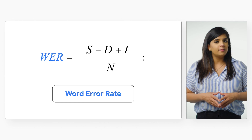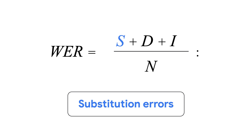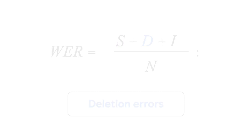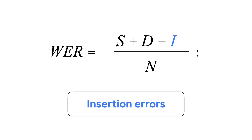Word error rate is a combination of three types of transcription errors which can occur. First, we have substitution errors — words that are present in the hypothesis and ground truth, but not transcribed correctly. Then deletion errors — words that are missing from the hypothesis but present in the ground truth. Then we have insertion errors — words present in the hypothesis transcript that are not present in the ground truth.